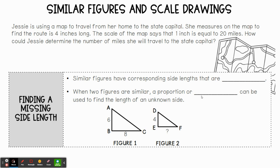If she's moving four inches and every inch is 20 miles, all we're doing is multiplying by four. So we should get 80 miles of travel. This leads us into what we want to talk about today — finding scale drawings.